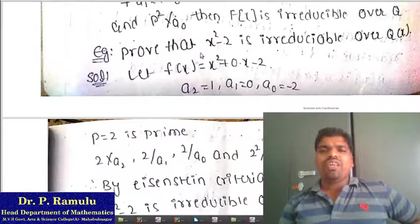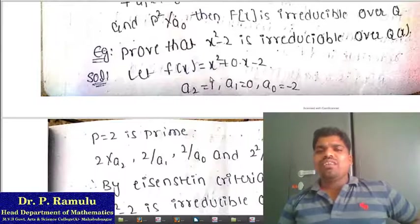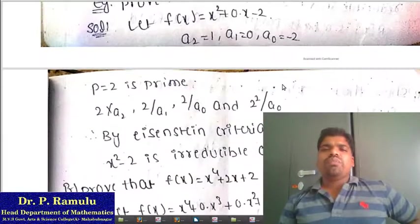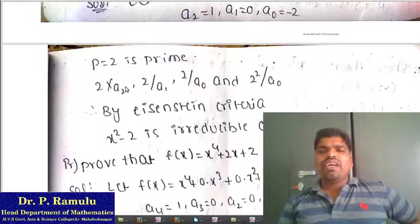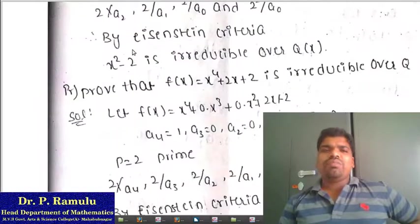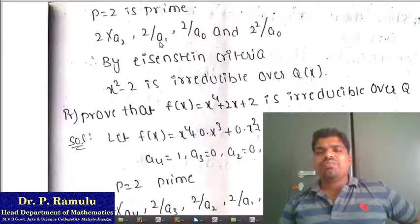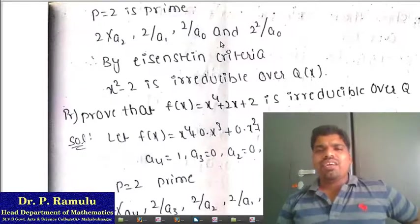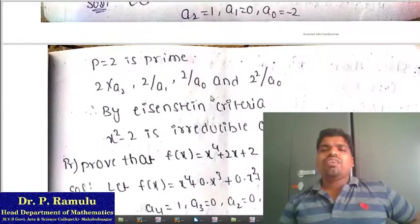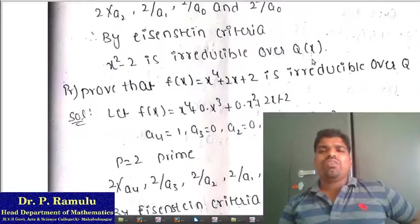Verifying by Eisenstein criteria: x² − 2, where a₂ = 1, a₁ = 0, a₀ = −2, and prime p = 2. Check: 2 does not divide a₂ = 1 (leading coefficient). 2 divides a₁ = 0. 2 divides a₀ = −2. And 2² = 4 does not divide a₀ = −2. By Eisenstein criteria, x² − 2 is irreducible over Q[x]. Note: Eisenstein criteria applies only to Q[x].